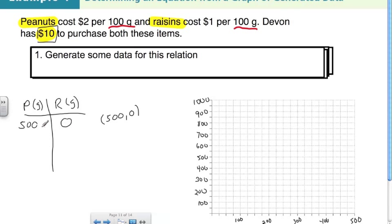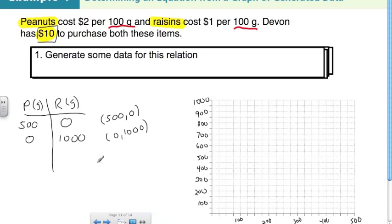Now let's do the opposite: buy no peanuts and only raisins. Raisins are $1 per 100 grams. With $10, that gives 1,000 grams of raisins — the point (0, 1000), which is the y-intercept. Even though two points technically define a line, we like to find at least three to confirm this is a linear relationship — meaning it creates a straight line.